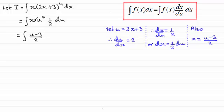So if we do that, we've now got the integral of u minus 3 over 2 for the x, and then that's being multiplied with the u to the power 4, so just put that in brackets there, multiplied with u to the power 4. And then we've got half du. So now I've got an integral all in terms of u. So that's good.